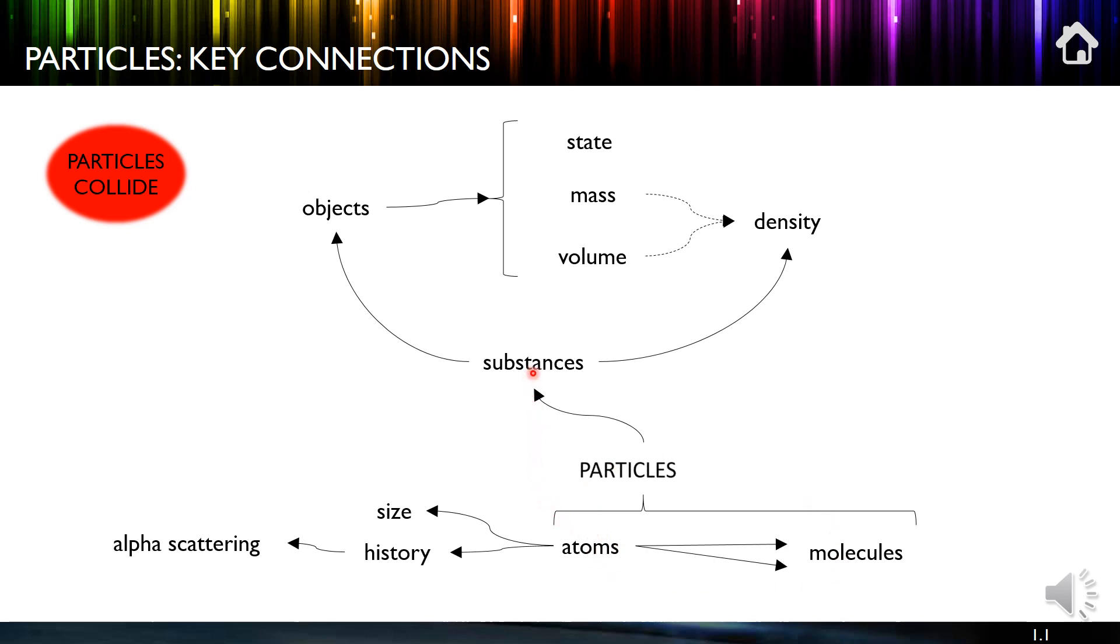Then we look at substances. So substances have a density, but objects, as well as having density, also have these things: state, mass, and volume. Mass and volume together contribute to the idea of density.